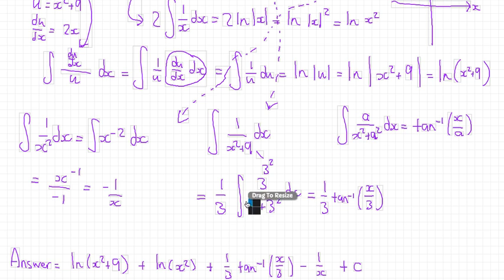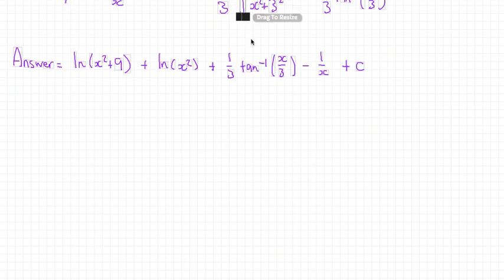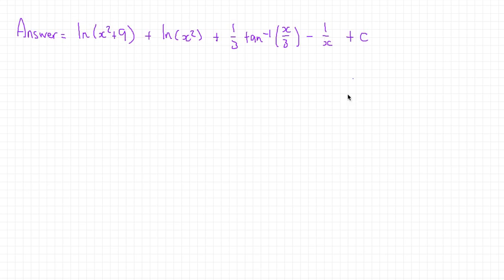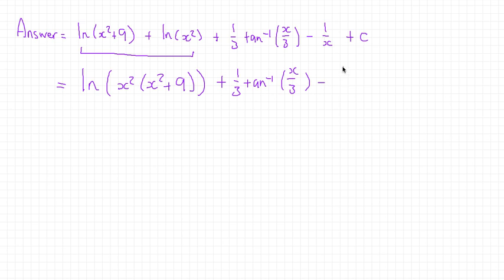Anyway, so that's not quite the final step because we can do it a little bit more. We can take this and simplify it into something that looks a little nicer. Well, the only real thing we can do here is maybe collect these two together with a log law that says that if you add two logs together, it's the same as multiplying what's on the inside. So we would get the natural log of x squared multiplied by x squared plus 9. That is the argument here, x squared, multiplied by the argument here, x squared plus 9. And just to sort of fully write out the rest of this, we could write plus 1 third inverse tan of x over 3 and minus 1 over x and plus c. And then we are done.